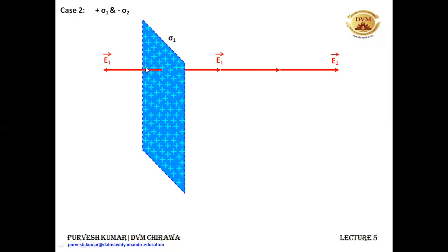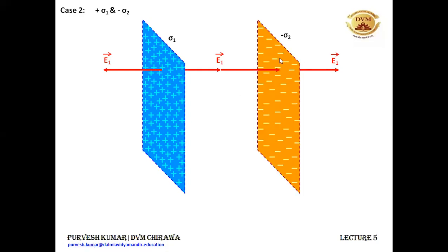From a positive charge the electric field will always be pointing outward. Now we have one another sheet and this is negatively charged. Since this sheet is negatively charged, the electric field lines because of this negatively charged sheet will be coming towards it. So the electric field will be coming towards the negatively charged sheet.